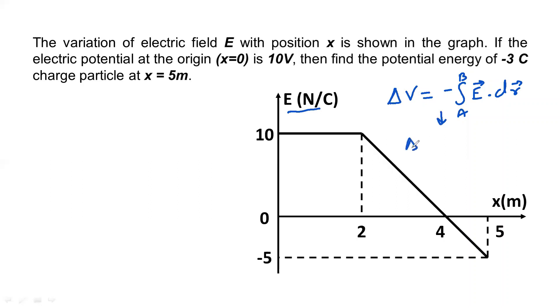When we plot the graph, two-dimensional graph, in one axis there is electric field and the other variation in one axis. So now how can I write this equation? Delta V is equal to minus integral E dx from a to b.